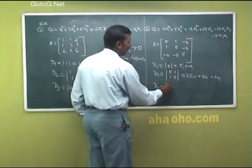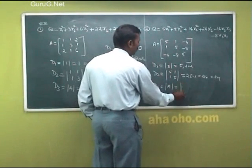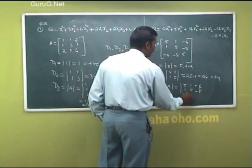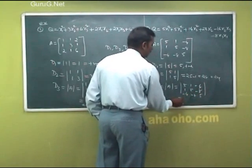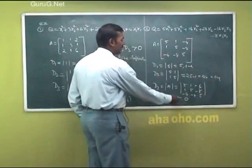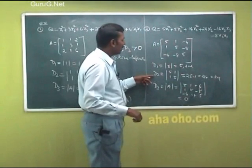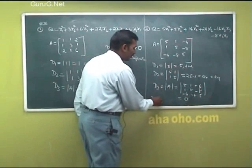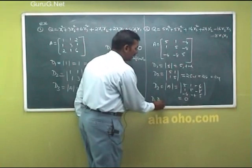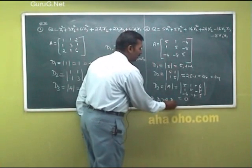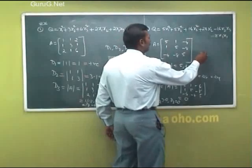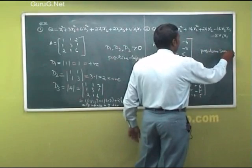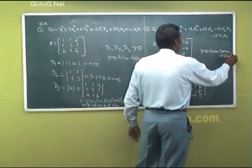D3 is the determinant of A. The matrix is: [1, 5, −4; 1, 5, −8; −4, −8, 5]. The determinant of A equals 0. So D1 and D2 are positive, D3 is 0. Since all values are positive or zero with at least one zero, the quadratic form is positive semi-definite.